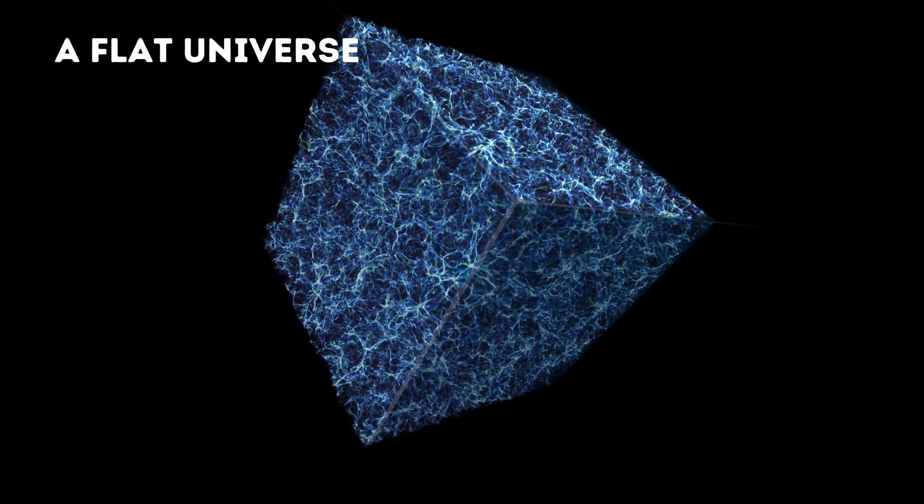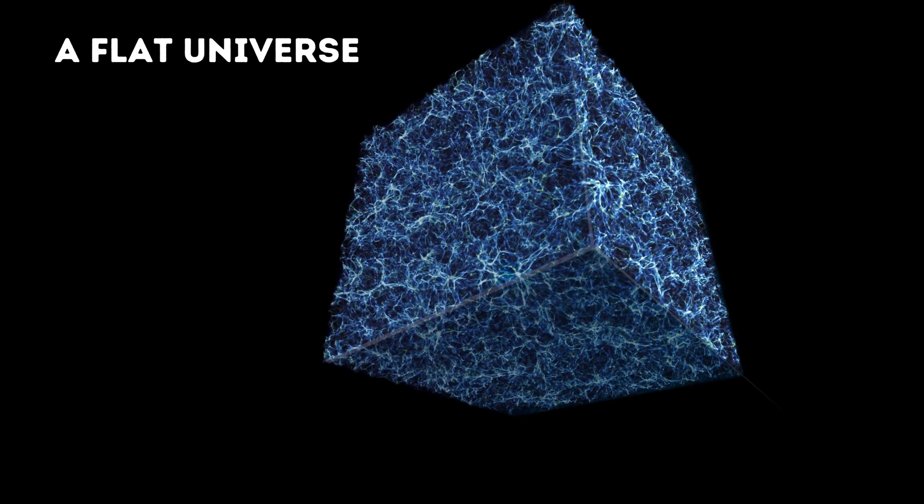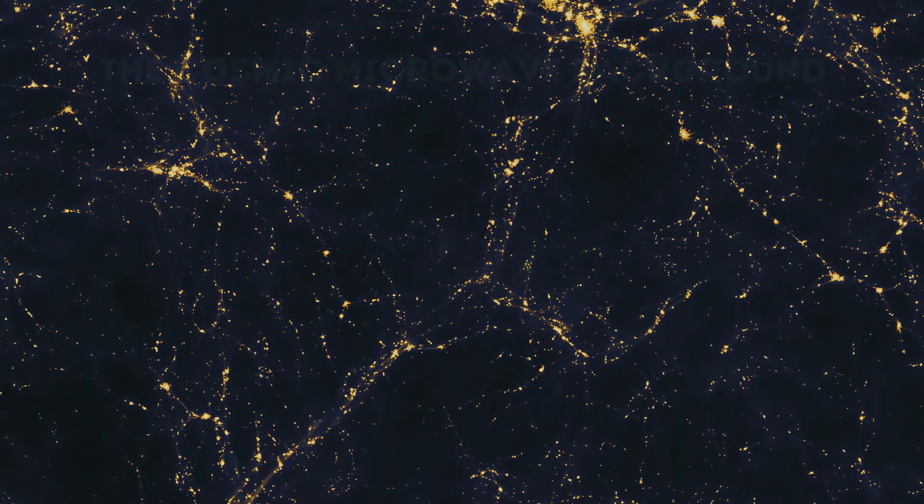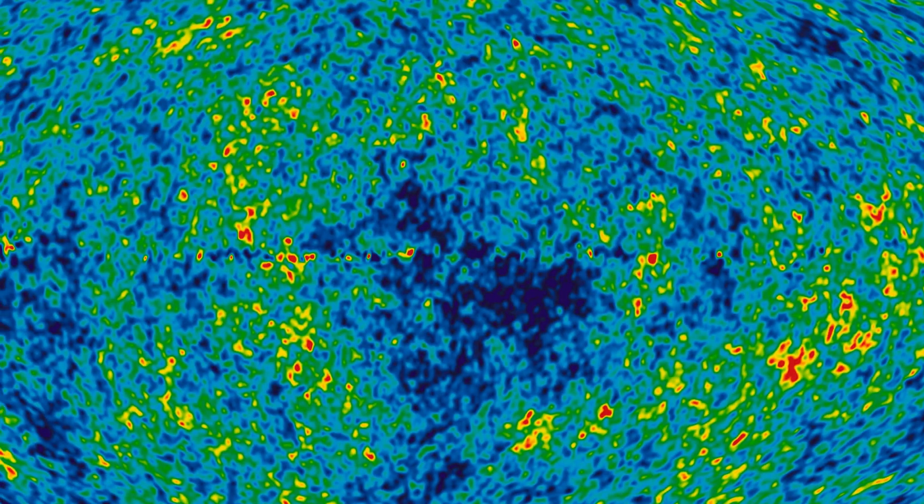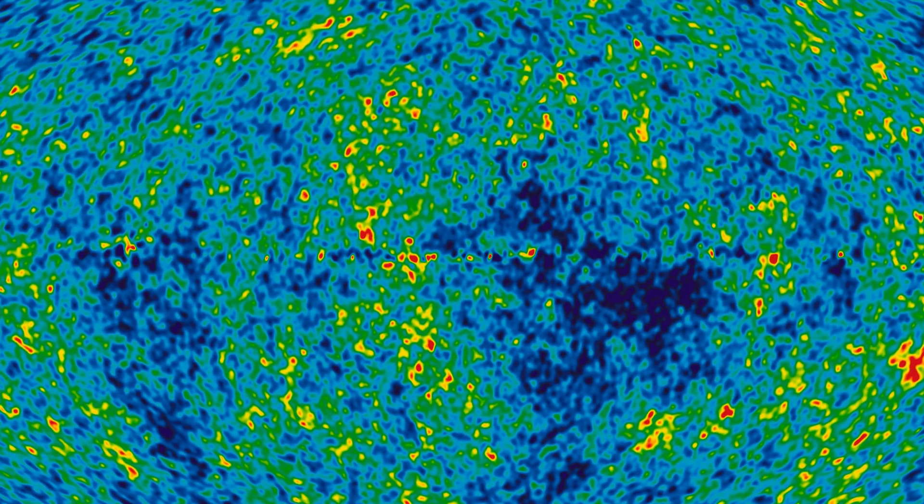A flat universe stretches out endlessly in all directions, like a never-ending plane. The measurements of the afterglow from the Big Bang suggest the universe is flat with a small margin of error.